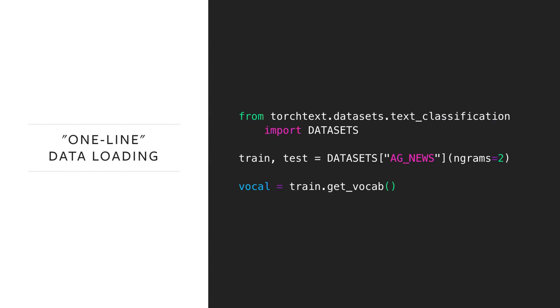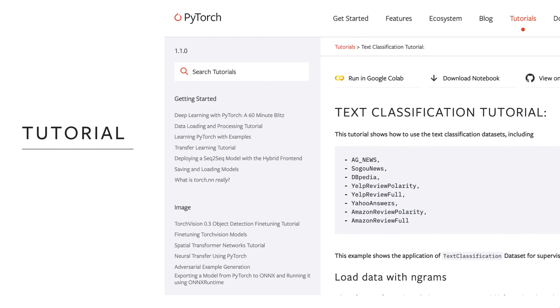Here's a very simple example. With a single line you can load the dataset AG News, and with another line you can generate the vocabulary. Very easy to use. In addition to those datasets, we also include a full tutorial to show how to use those datasets for text classification analysis. For a long time our GitHub users requested this kind of tutorial, so this time we released the full tutorial. We also improved a few functions to help you easily implement future datasets. You can find more examples on our GitHub.